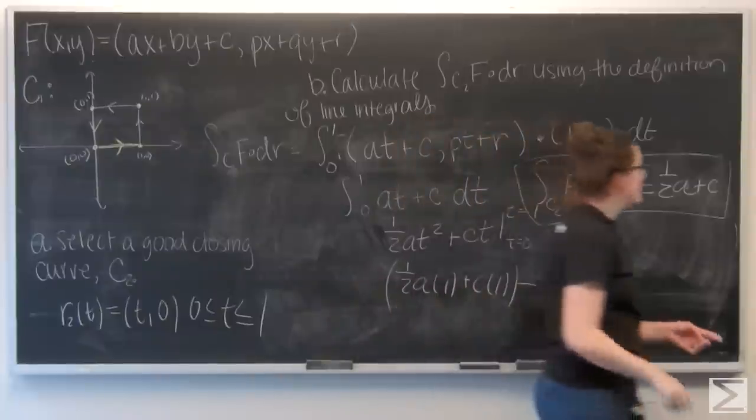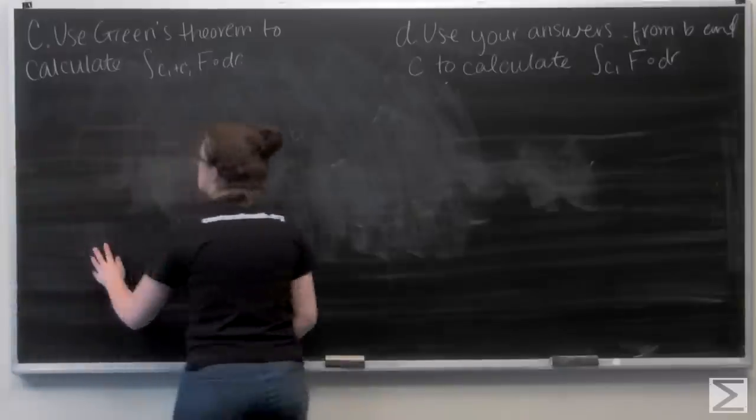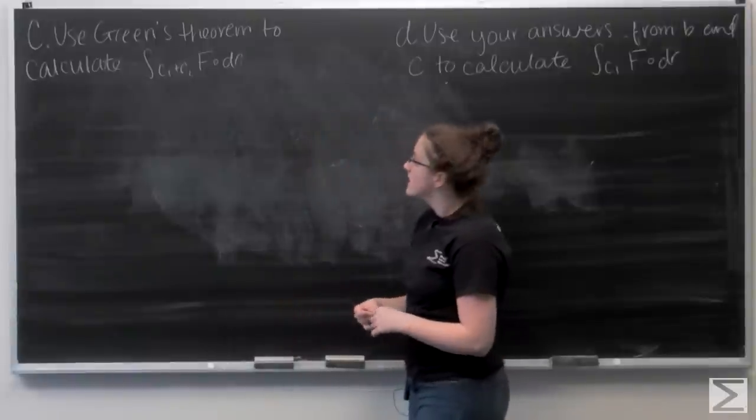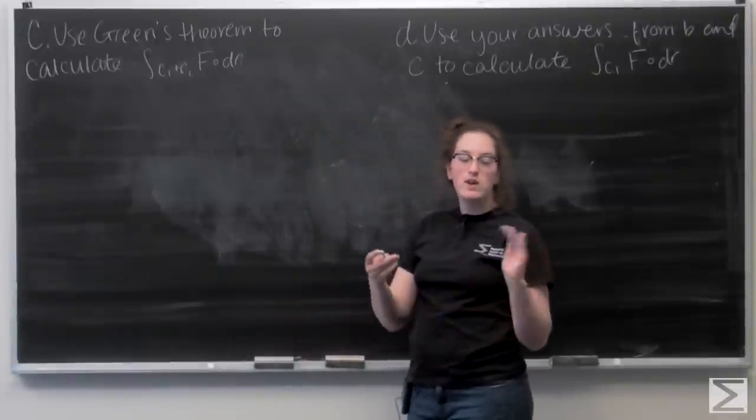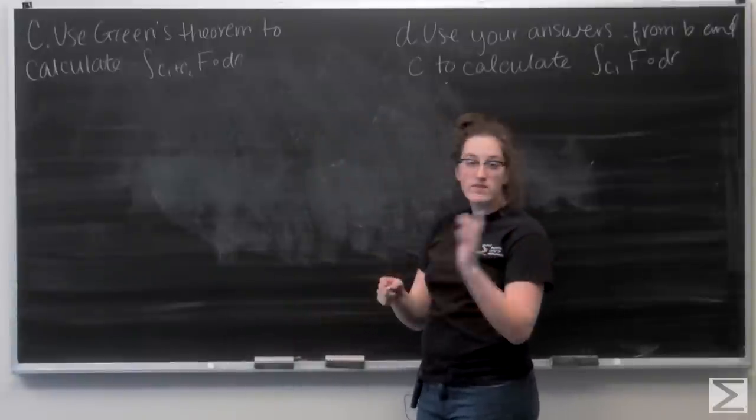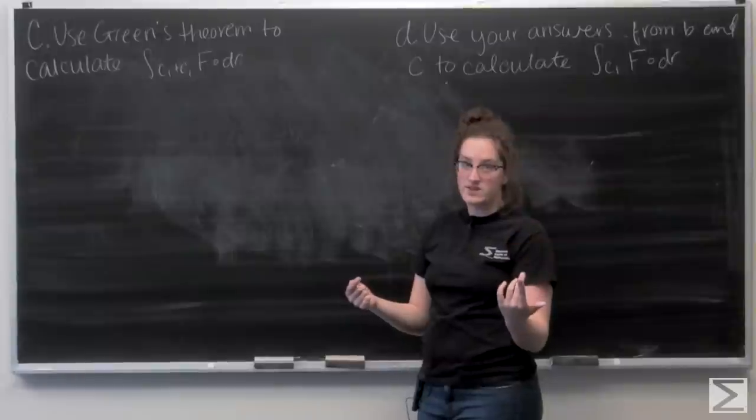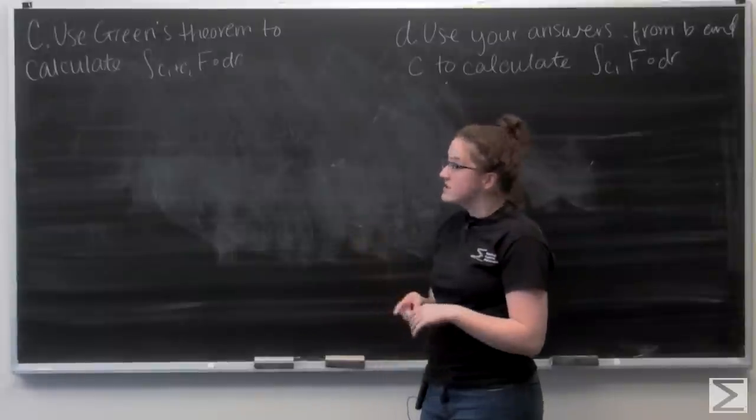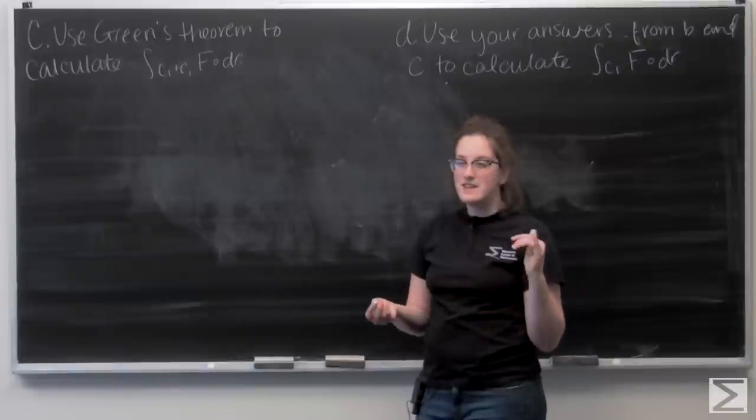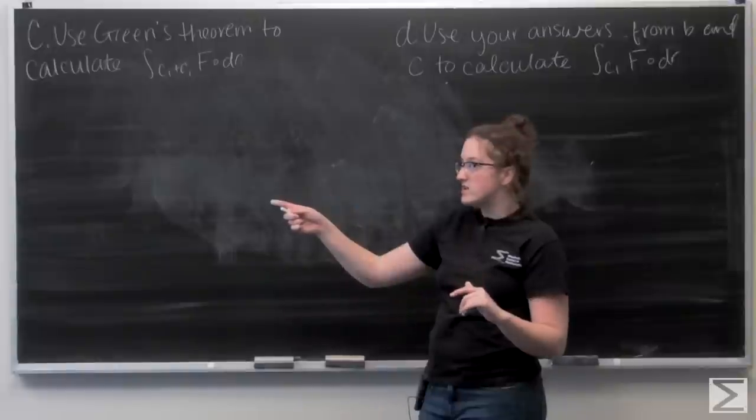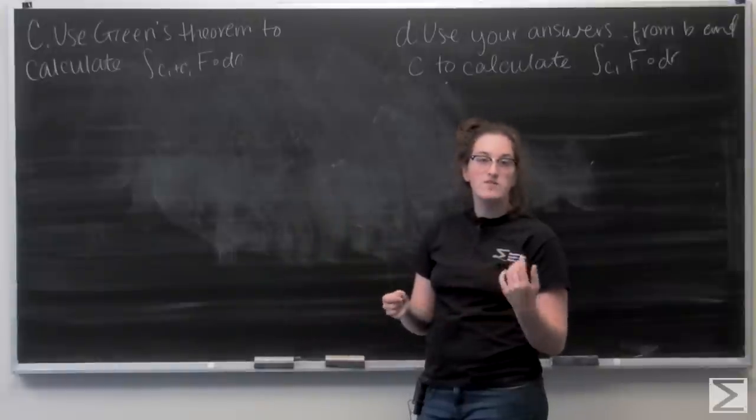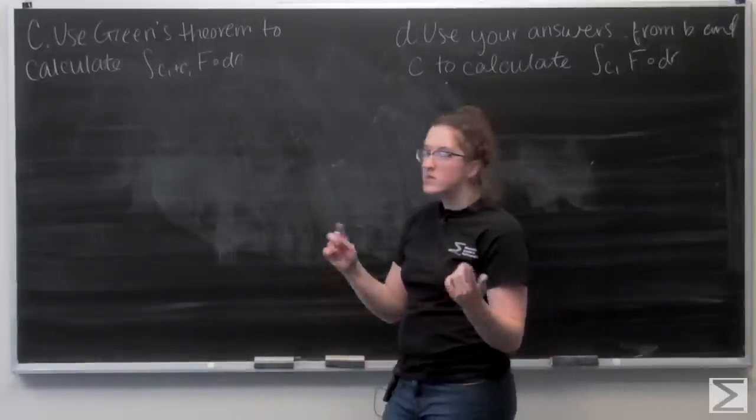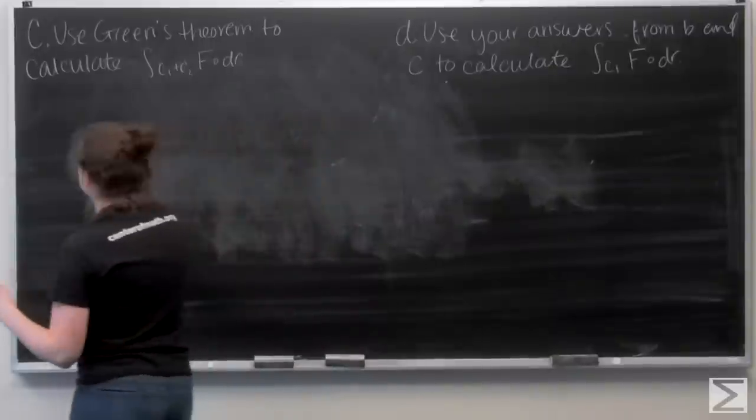Let's move on to part C. That asks me to use Green's theorem to calculate the line integral of f over c1 and c2. So now that I've got a closed curve, I can go ahead and use Green's theorem. Let's recall the Green's theorem is the integral over the area that our curve encloses of the two-dimensional curl of our force field. So let me rewrite my force field.